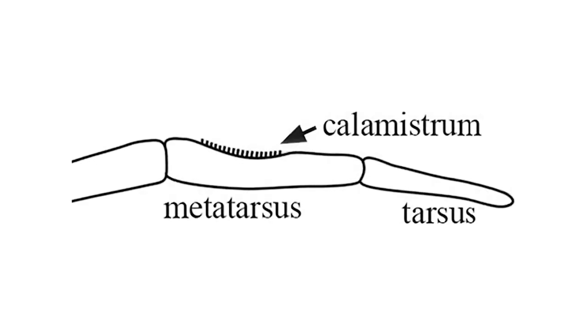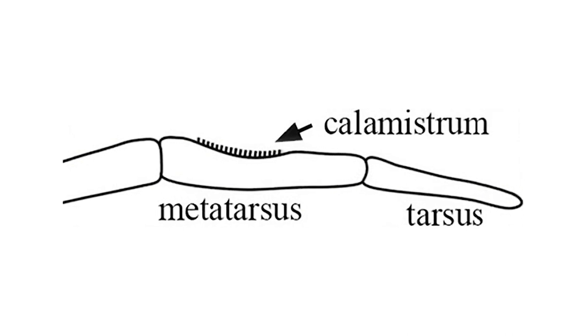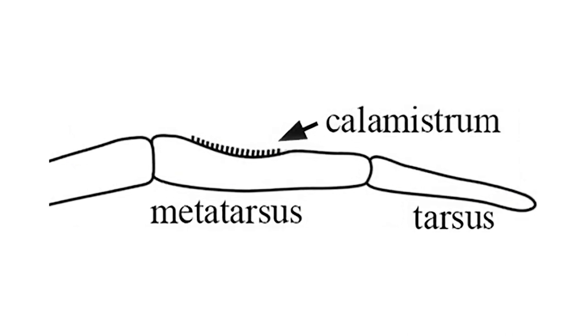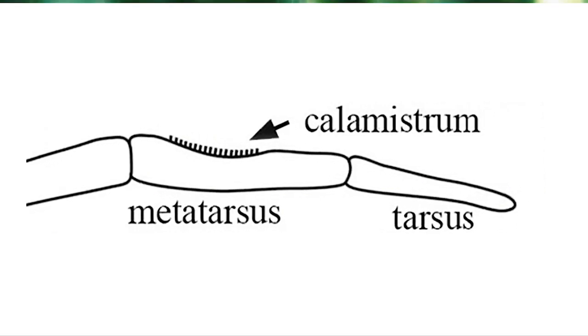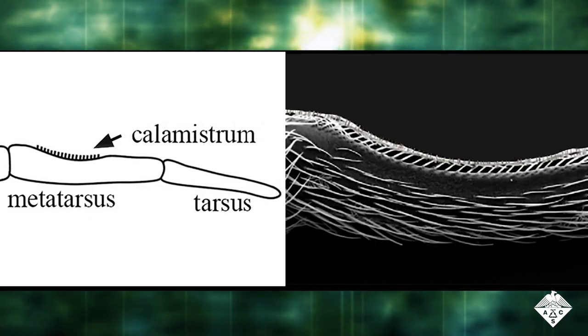To keep from getting caught in their own webs, these spiders use a nonstick comb, called a calamistrum, on their back legs. During web-making, the calamistrum grabs onto nanofibers emerging from the spider's abdomen and assembles them into threads.